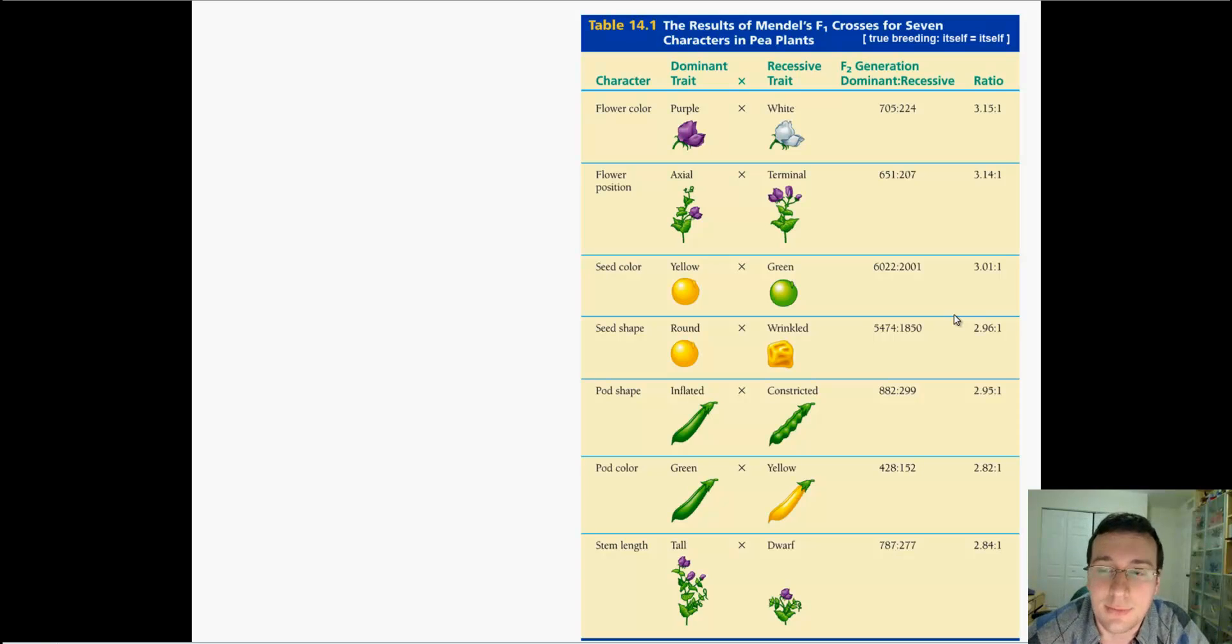You can actually do this today. We have something called Wisconsin Fast Plants. If you want to do level five on that, we can go outside, we can plant a garden, and they will grow very, very fast. So you can actually test in two generations of pea plants what Mendel said and see if you get a 3 to 1 ratio. It's pretty amazing.